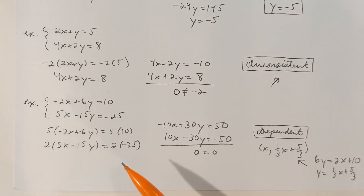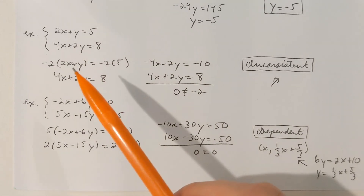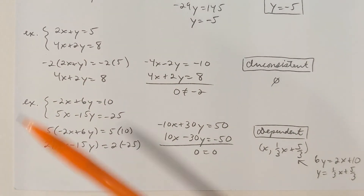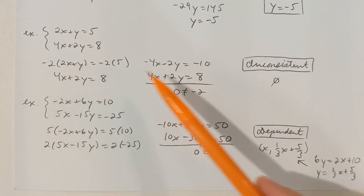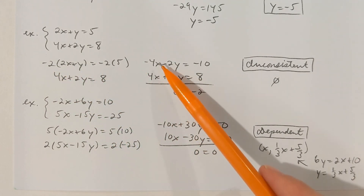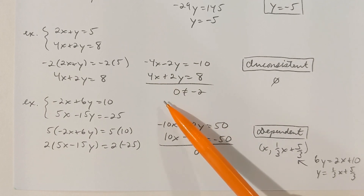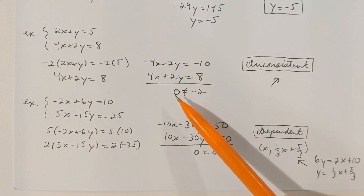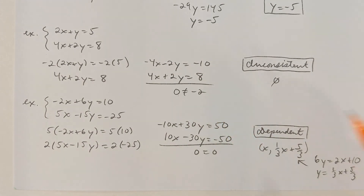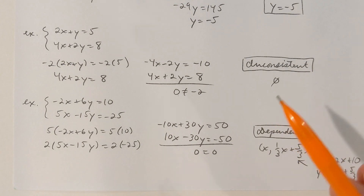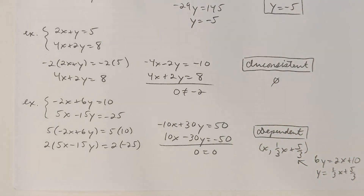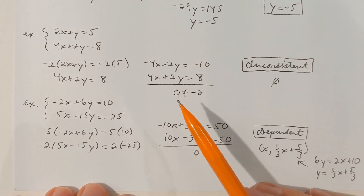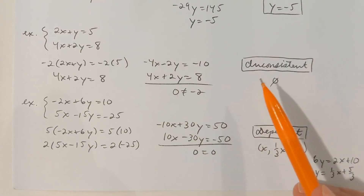Here's another one using the elimination method. I'm going to eliminate x by multiplying the top equation by negative 2 and then adding the equations together. Negative 4x plus 4x is 0 — x is eliminated. But y is also eliminated, giving us 0 equal negative 2. That's not a true statement, so this system is going to have no solutions. In general, it doesn't matter which method you use — all the methods will produce the same conclusion.